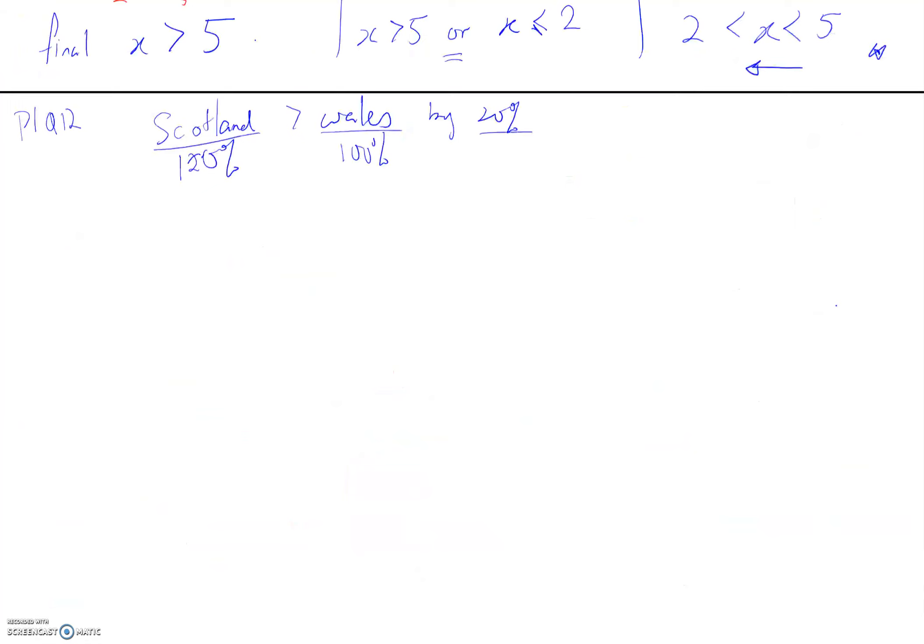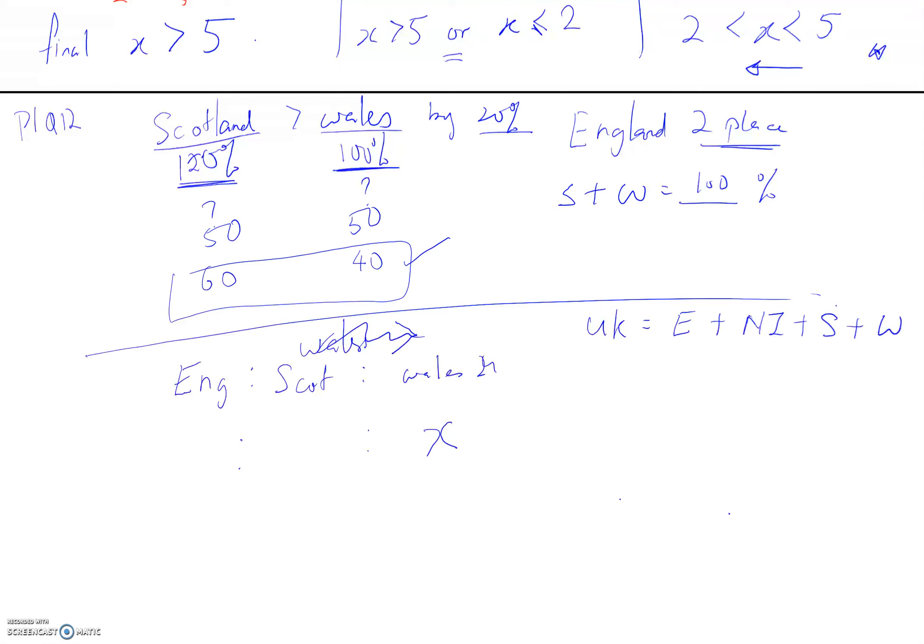Let's try: Scotland exceeds Wales by 20%. So if I say Wales is 100, then this one will be 120. Let's say England is only made up of these two places. That means Scotland plus Wales must give you how many percent? 100%. So how do I calculate? How many percent is this, how many percent is this, so that added together will be 100%?